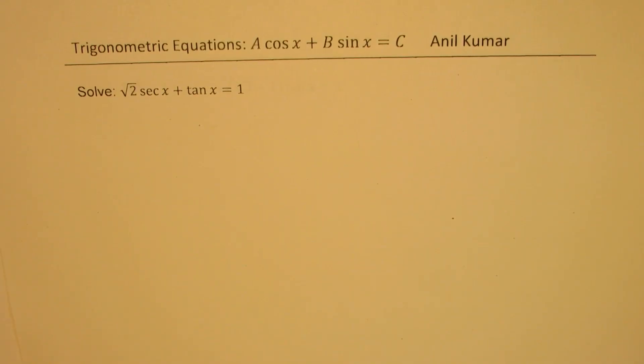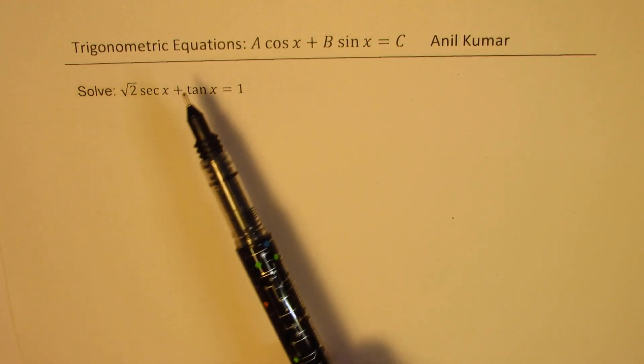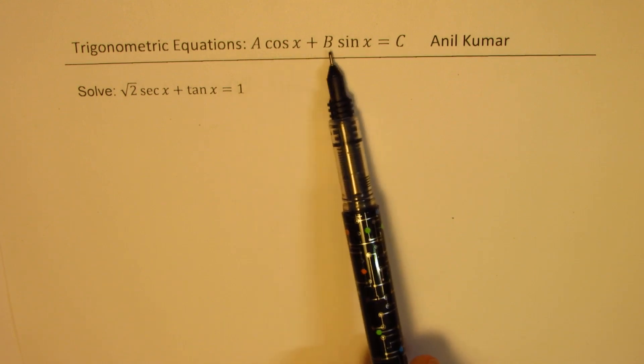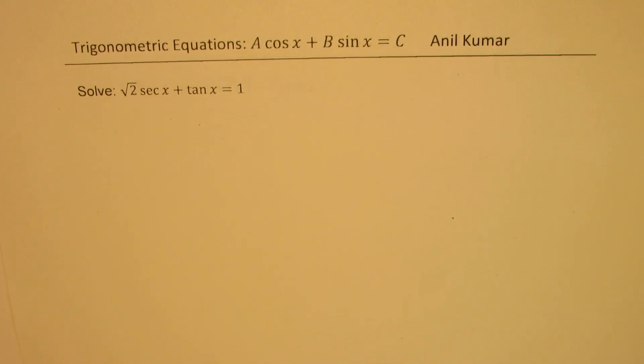I am Anil Kumar. Welcome to my series on solving trigonometric equations. We are taking some very special cases where we are going to use the compound angle formula, rewrite an equation of the form a cos x plus b sin x equals to c and then solve.